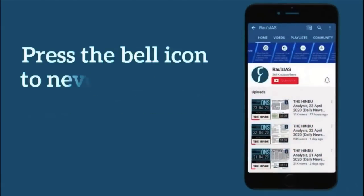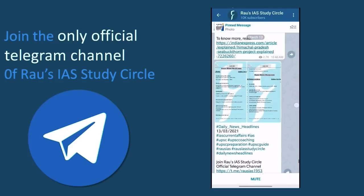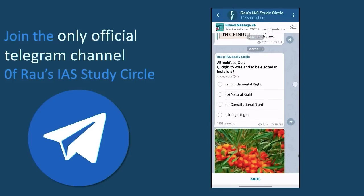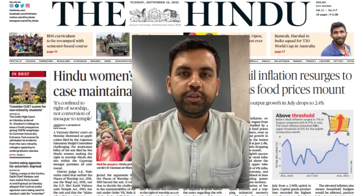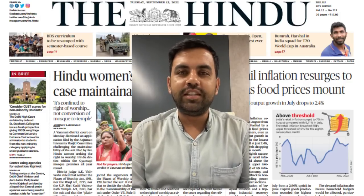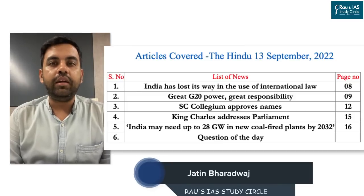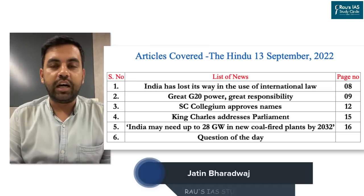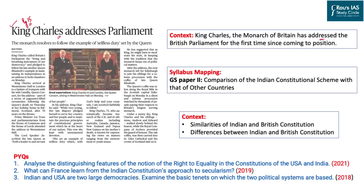Subscribe to our channel and press the bell icon to never miss an update. Join the only official Telegram channel of Rao Zai's Study Circle to get relevant material and important updates. Welcome to Daily News Simplified, your one-stop solution to detailed analysis of current affairs published in the daily edition of The Hindu newspaper, equally relevant for your UPSC preparation. Articles dated 13th September 2022 are listed on your screen, with time-stamping and notes in PDF and Word format in the description box. Let us begin with the first article, which appeared on page 15, the international relations page.